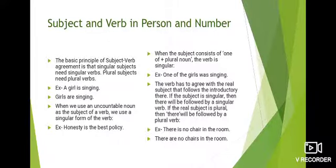The basic principle of subject-verb agreement is that singular subjects need singular verbs and plural subjects need plural verbs. Example: 'A girl is singing.' A girl is a singular subject, and 'is' is a singular verb.